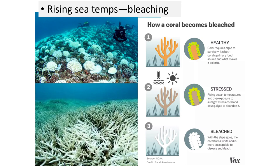We also see rising sea temperatures, which are causing bleaching. Remember, bleaching is not related to ocean acidification — they're both related to higher sea temperatures, but bleaching and acidification are not directly the same thing. Healthy coral needs algae to survive because it's the primary food source and what makes it colorful. As temperatures rise and too much sunlight is exposed, it stresses the coral, causing the algae to abandon it, which causes the coral to bleach and turn white, making it more susceptible to disease and death.